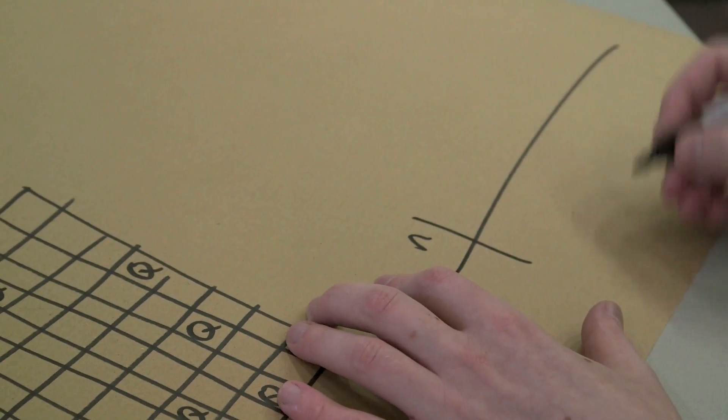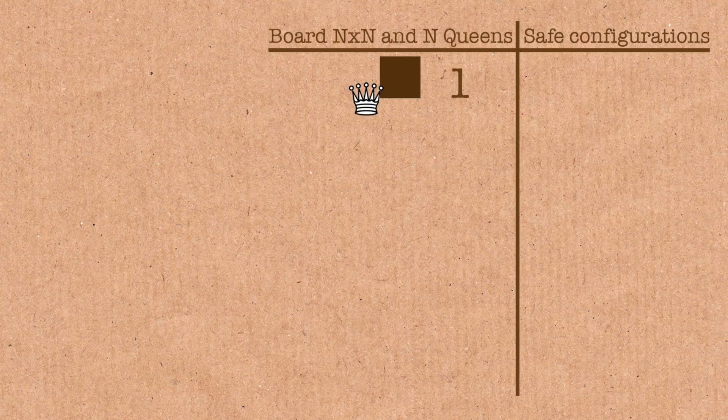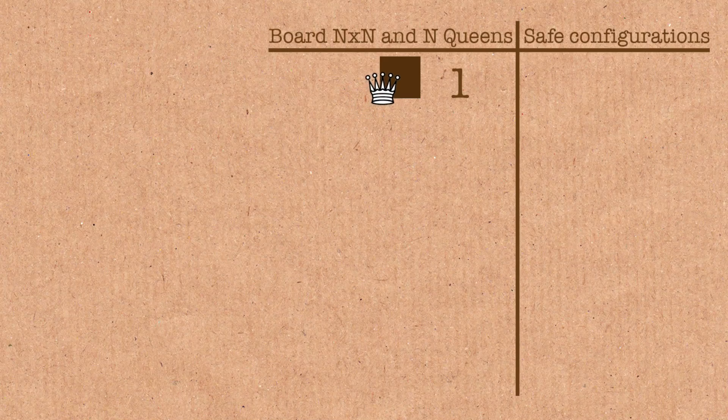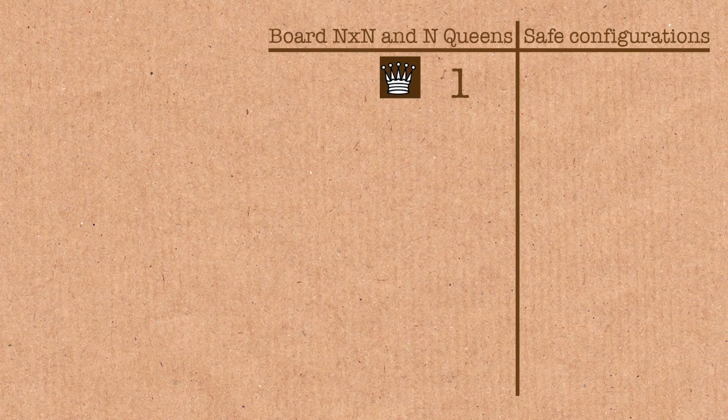So this is your size of your board, so you might have a 1x1 board. And you're placing one queen on it, how many ways can you do that? One. Fine.